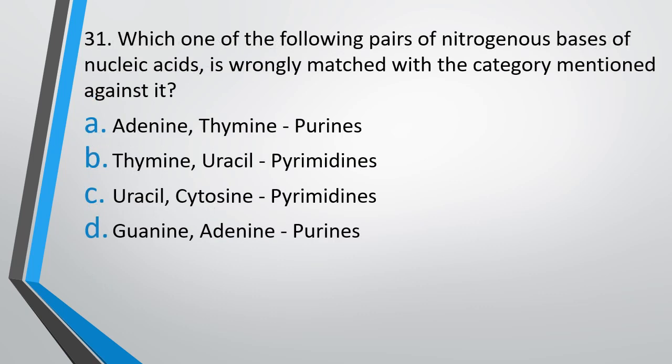Question number 31. Which one of the following pairs of nitrogenous bases of nucleic acid is wrongly matched with the category mentioned against it? Options: Adenine-Thymine as purines; Thymine-Uracil as pyrimidines; Uracil-Cytosine as pyrimidines; Guanine-Adenine as purines. You have to mark which is wrongly matched. The answer is option A — adenine and thymine. Adenine is a purine whereas thymine is a pyrimidine.